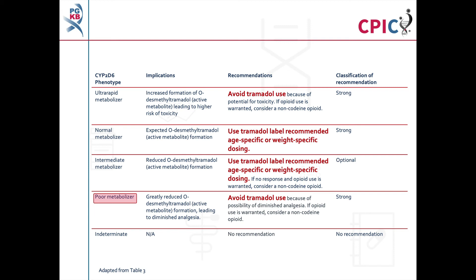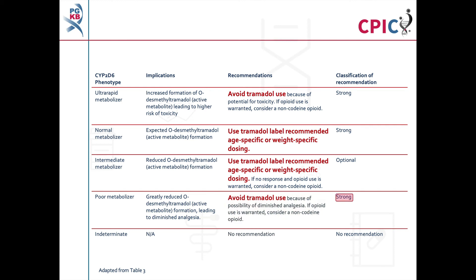Patients with a CYP2D6 poor metabolizer phenotype will have greatly reduced O-desmethyltramadol formation leading to diminished analgesia. Tramadol should be avoided in these patients. If opioid use is warranted, consider using a non-codeine opioid. This is a strong recommendation. No recommendation is given for patients with the CYP2D6 indeterminate phenotype.